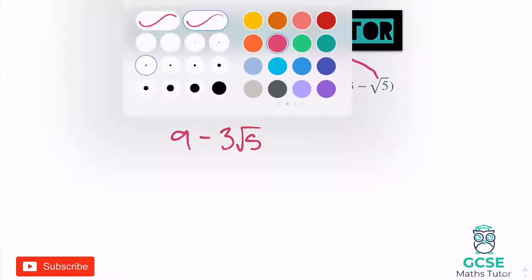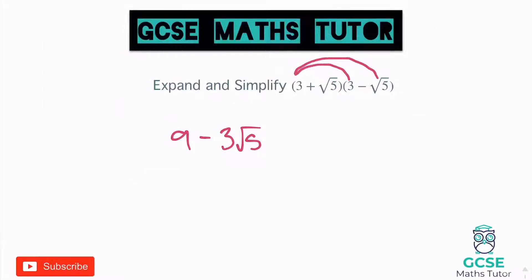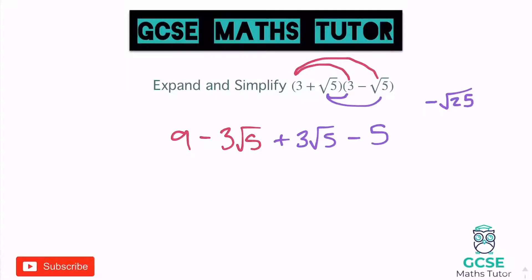Then I move on to the next one. So root 5 times root 3 makes plus 3 root 5. And the final one from root 5 to root 5 — it's a positive root 5 times a negative root 5, so my answer's going to be negative. It's going to make root 25, and that simplifies down to 5, so it's minus 5.